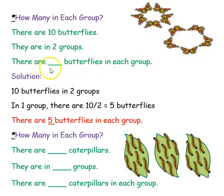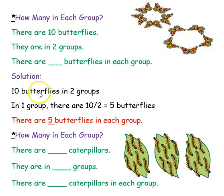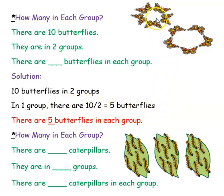The question is: there are dash butterflies in each group. You have to find how many butterflies are in 1 group. We have totally 10 butterflies in 2 groups. So in 1 group, there are 10 divided by 2, that is 5 butterflies. 5 butterflies in 1 group, and 5 butterflies in the other group. So 5 plus 5 is 10. There are 5 butterflies in each group.